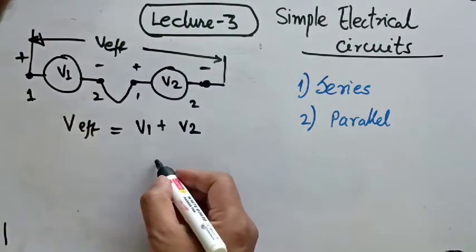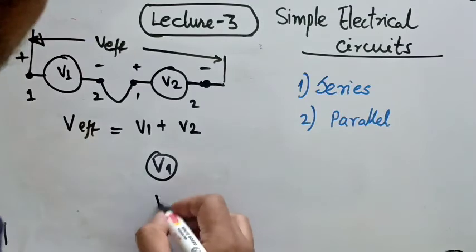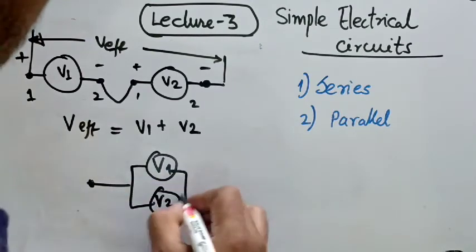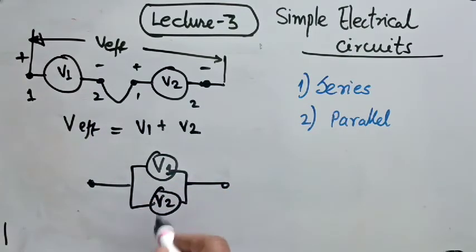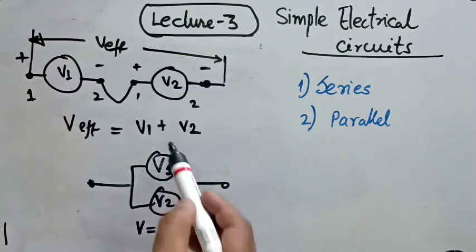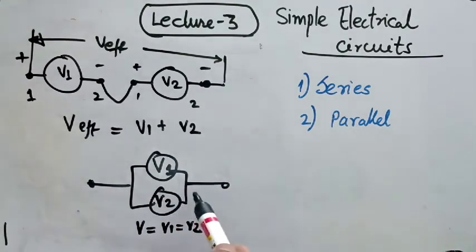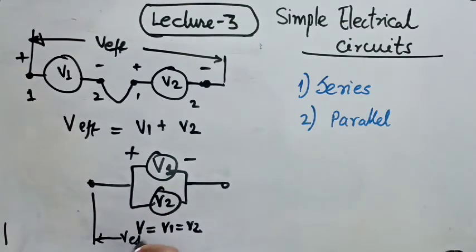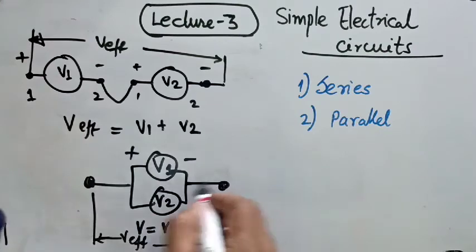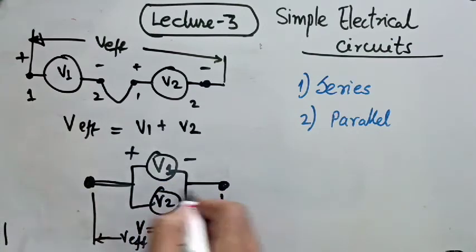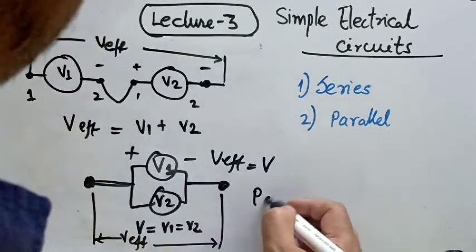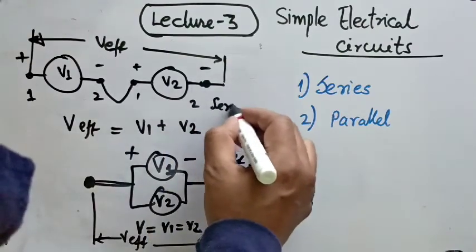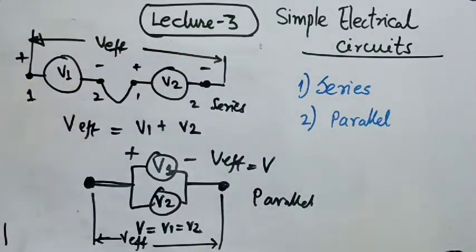Whereas if we take voltage sources V1 and V2 and connect them in parallel, the effective voltage across these two terminals — we have to assume for now that V1 and V2 are the same value V, otherwise current will drain from the high voltage source to the low voltage source if both are not the same. So assuming the two voltage sources are the same and connected in parallel, V_effective across these two terminals is V, because both sources share the same terminals. So for a parallel connection the effective voltage is V, whereas in series connection the effective voltage is V1 plus V2.